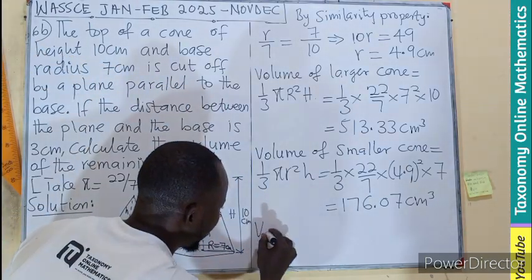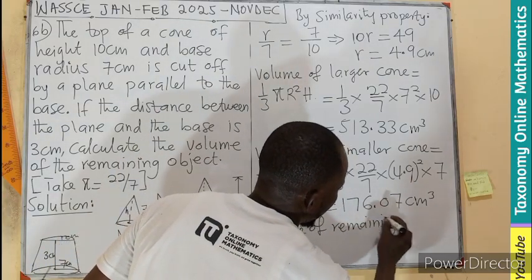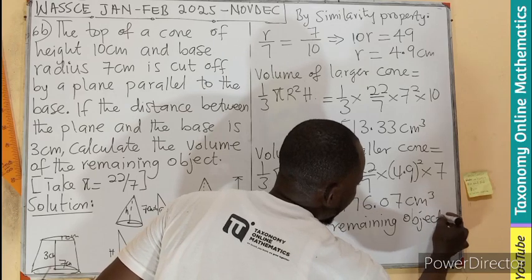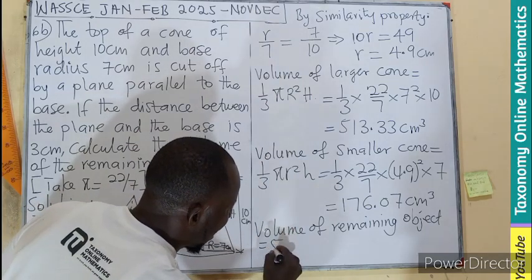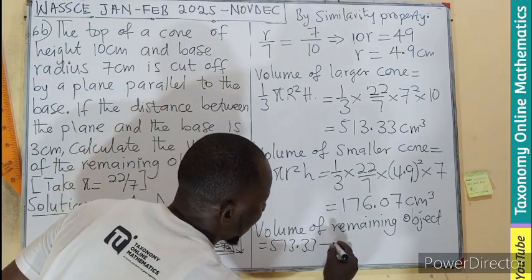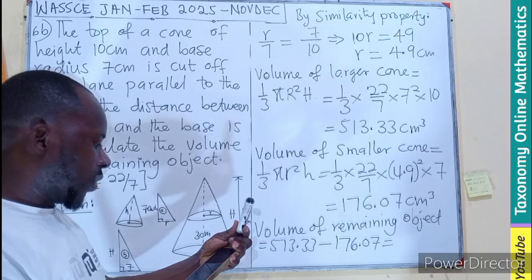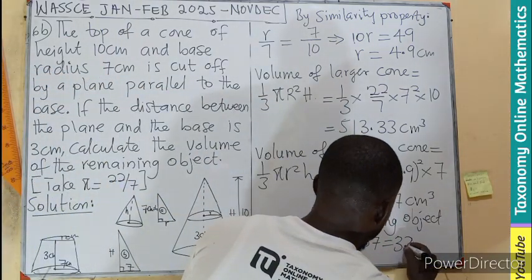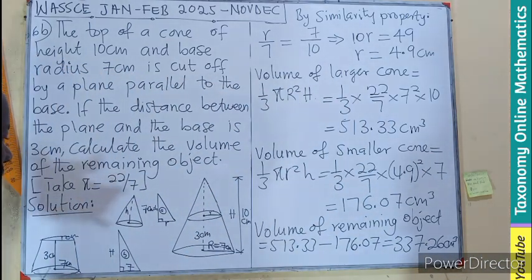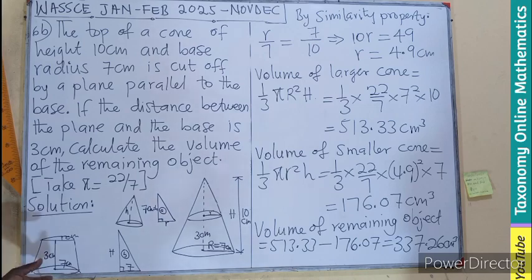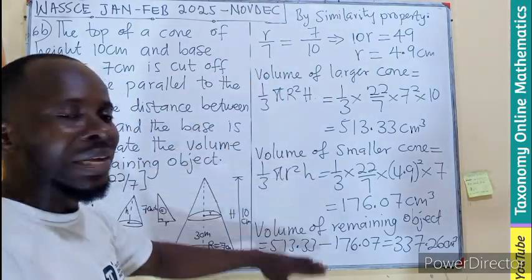So volume, final answer. Volume of remaining object, which is in this case we are going to call conical frustum, will be the volume of the larger one, which will be 513.33 minus 176.07. Let's perform that and see. So that will be giving us 337.26 centimeter cube. So the volume of the remaining object, which is the frustum, is going to give us 337.26 centimeter cube. This is by step-by-step approach.